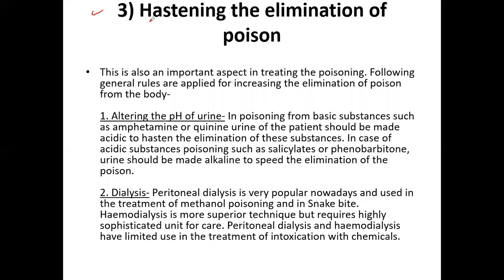The third approach is hastening or enhancing the elimination of poisons from the body. When we increase elimination, it minimizes toxicity. One approach is altering the pH of urine — for poisoning from basic substances like amphetamines and quinine, we must acidify the urine so that these basic substances are not reabsorbed and are eliminated in the urine.